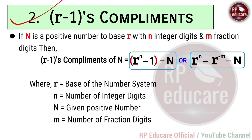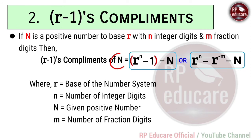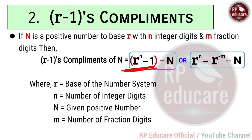Now r-1's complement: if capital N is a positive number with small r as the base, small n as integer digits, and small m as fractional digits, then the formula for r-1's complement is r to the power n minus 1 minus capital N. Alternatively: r to the power n minus r to the power negative m minus capital N. Compared to r's complement (r^n - N), here we use r^n - 1 instead.